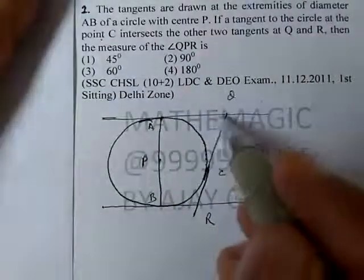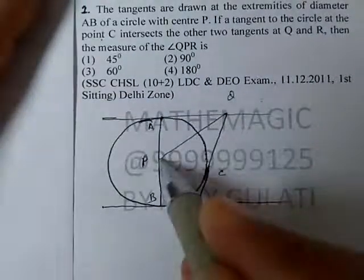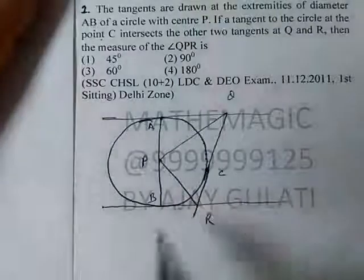Then the measure of angle Q, P, R is the measure of this angle Q, P, R is.